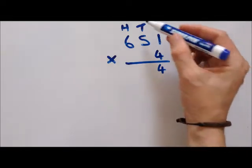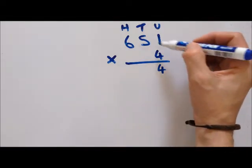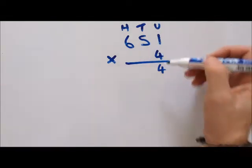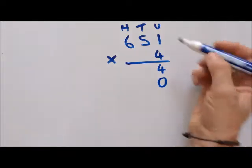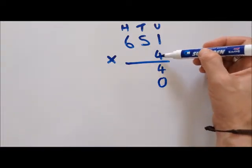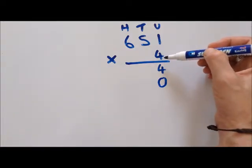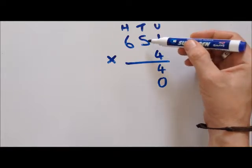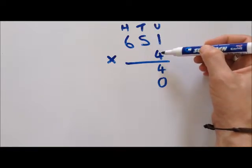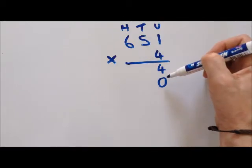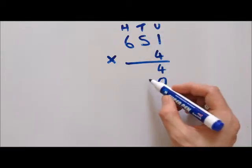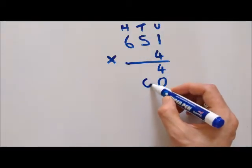Five times four — but it's not five times four, it's fifty times four, so it's going to be a multiple of ten. We put a zero underneath, then we answer five times four: five times four is twenty, but multiplied by ten it's two hundred, so we put that in here.